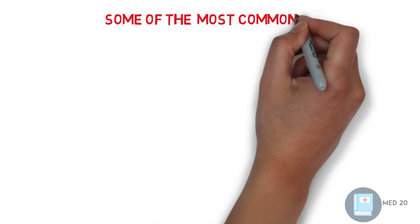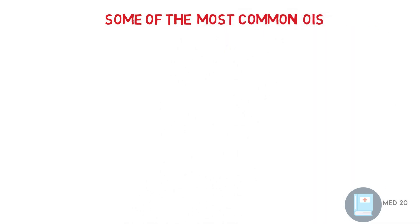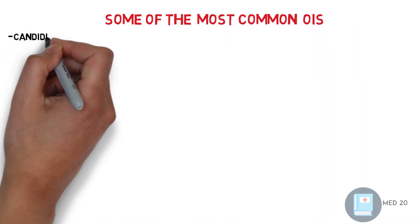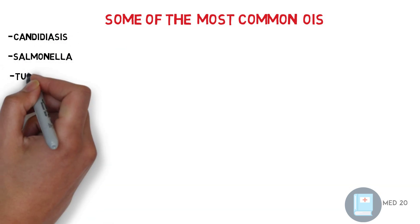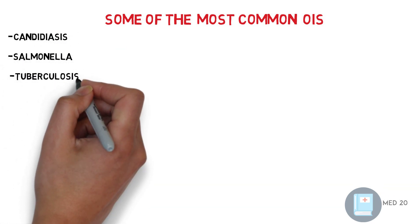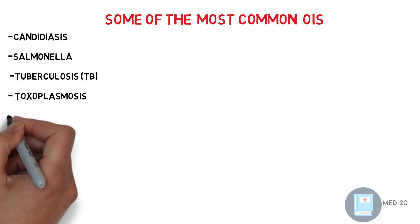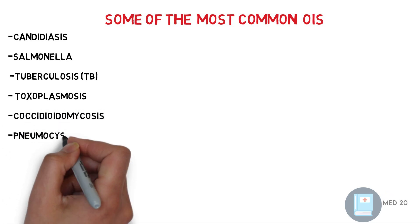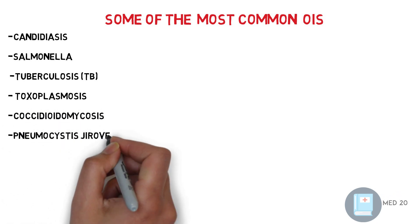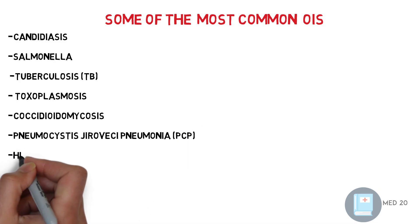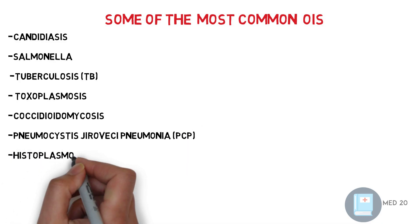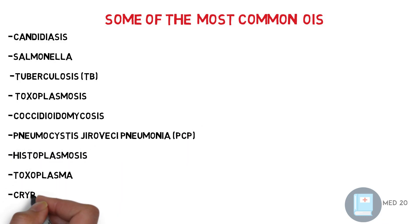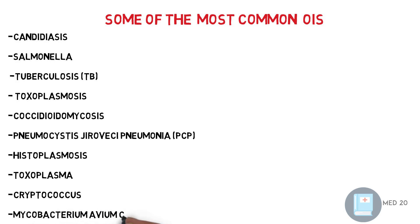Some of the most common opportunistic infections include candidiasis, salmonella, tuberculosis or TB, toxoplasmosis, coccidioidomycosis, Pneumocystis jirovecii pneumonia or PCP, histoplasmosis, toxoplasma, cryptococcus, mycobacterium avium complex.